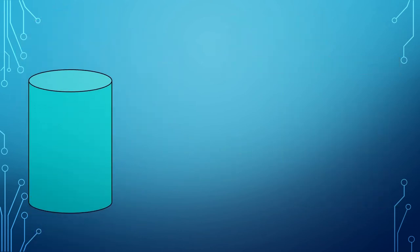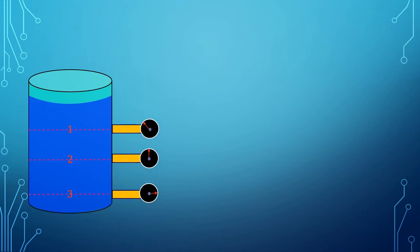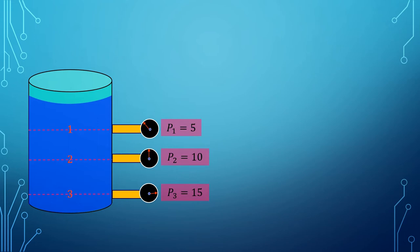Let's take a container filled with water and attach three pressure gauges displaying pressures at different heights. Now if we apply a pressure of 5 units normal to the water surface, you will see the pressure increases by 5 units in each gauge reading. This is called Pascal's law.